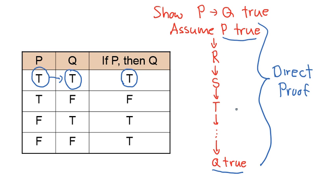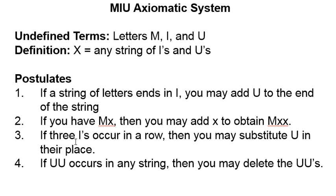In general, if you're asked to prove a statement directly, what you're asked to do is assume the hypothesis is true and use a series of deductions to show that the conclusion must be true. True hypothesis, true conclusion — the overall conditional statement must be true. So MIU is an axiomatic system designed to acquaint students with this method of direct proof.